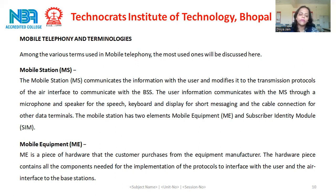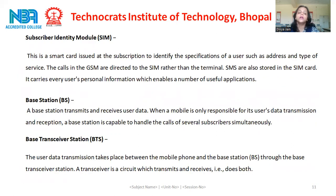The mobile station has two elements: mobile equipment and subscriber identity module, also called SIM card. Mobile equipment is a piece of hardware that the customer purchases from the equipment manufacturer. The hardware contains all the components needed for the implementation of the protocols to interface with the user and the air interface to the base station. The next part of our MS system is the SIM card, which is inserted in our mobile unit.